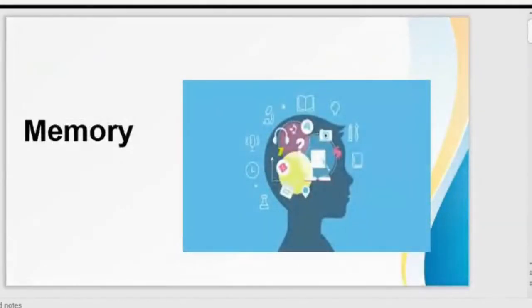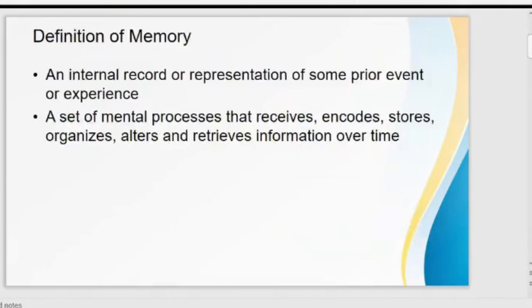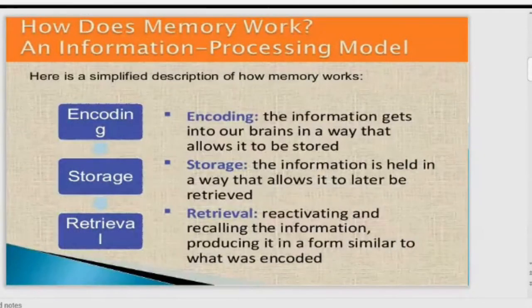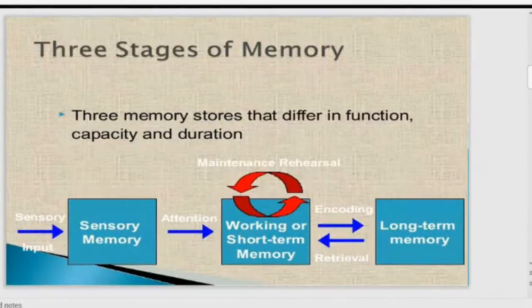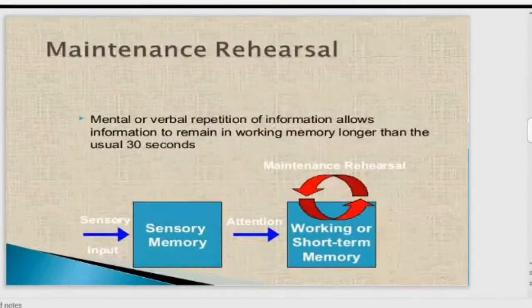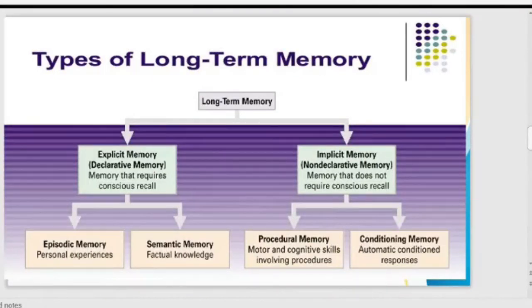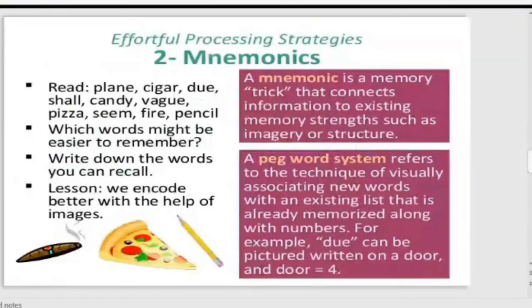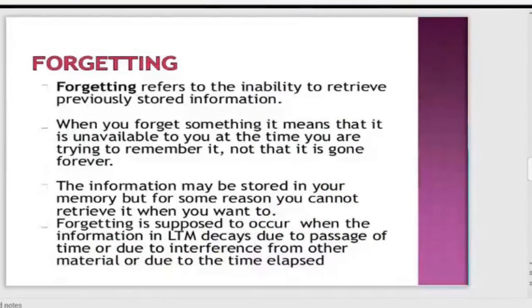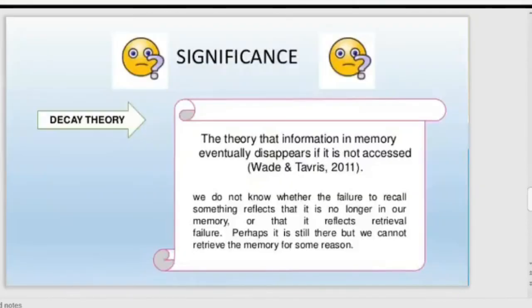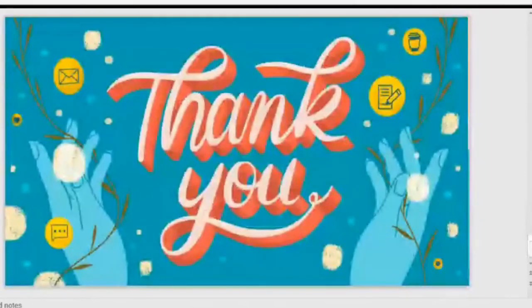To summarize today's lecture: we studied the definition of memory and how it works. The three processes are encoding, storage, and retrieval. We discussed three stages of memory — sensory, working, and long-term — as well as maintenance rehearsal, types of long-term memory, and strategies to improve memory. We then studied forgetting, the forgetting curve, and four theories of forgetting: decay theory, interference theory, motivated forgetting theory, and retrieval failure theory.